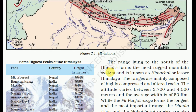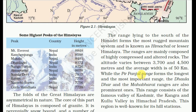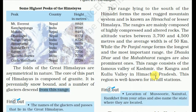The range lying to the south of the Himadri forms the most rugged mountain system, known as the Himachal or Lesser Himalaya. These ranges are mainly composed of highly compressed and altered rocks. The altitude varies between 3,700 to 4,500 meters and the average width is about 50 km. The Pir Panjal range forms the longest and most important range, while the Dhaula Dhar and Mahabharat ranges are also prominent ones. This region contains the famous valleys of Kashmir, Kangra, and Kullu Valley in Himachal Pradesh, and is well known for its hill stations.